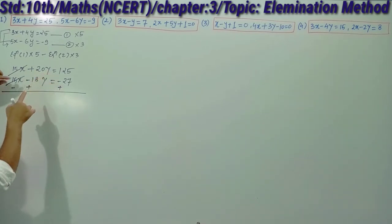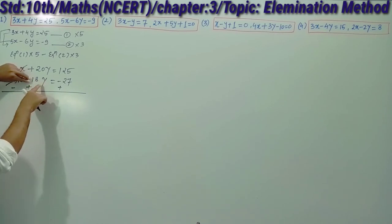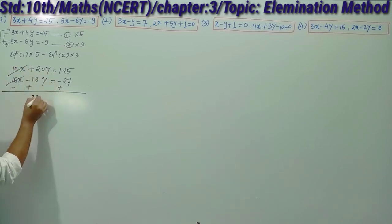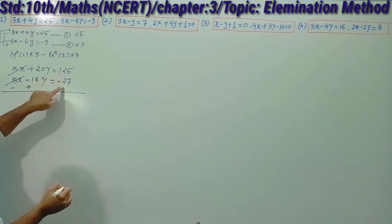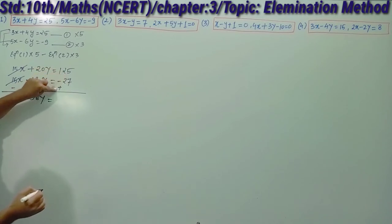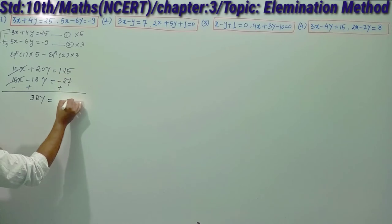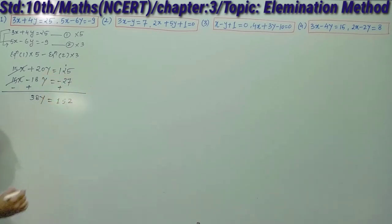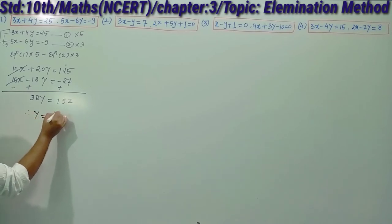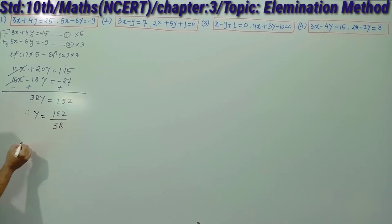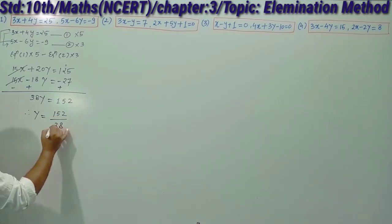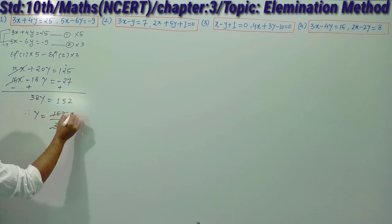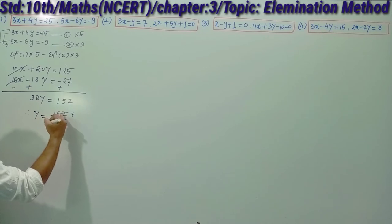After cancelling the x terms, we have 20y plus 18y equals 38y on the left side, because when you subtract a negative it becomes positive. On the right side, 125 plus 27 equals 152. So 38y equals 152. Dividing both sides by 38, we cancel to get y equals 4.